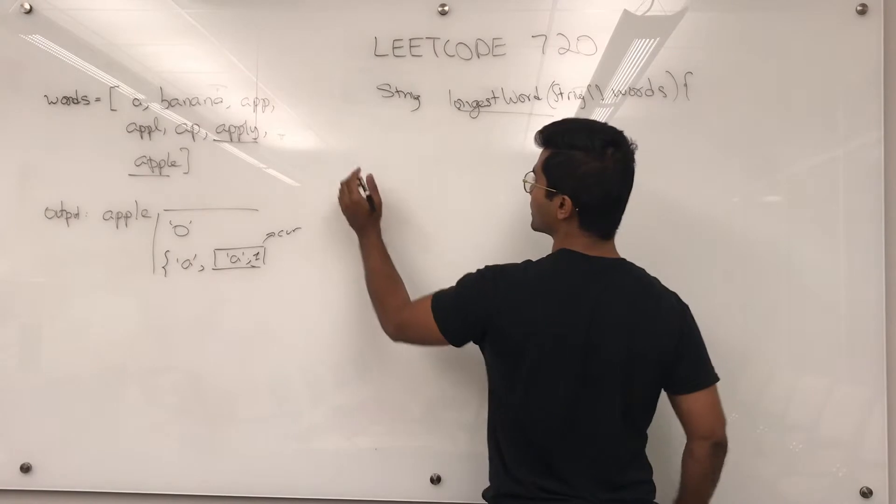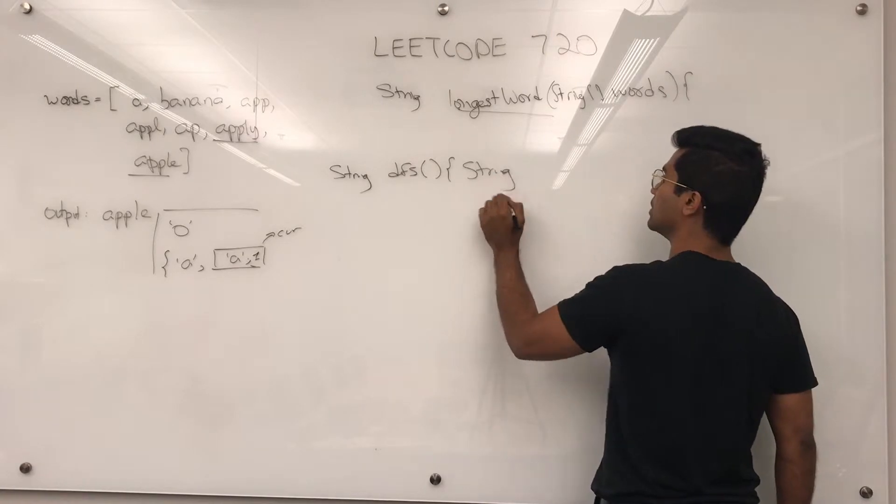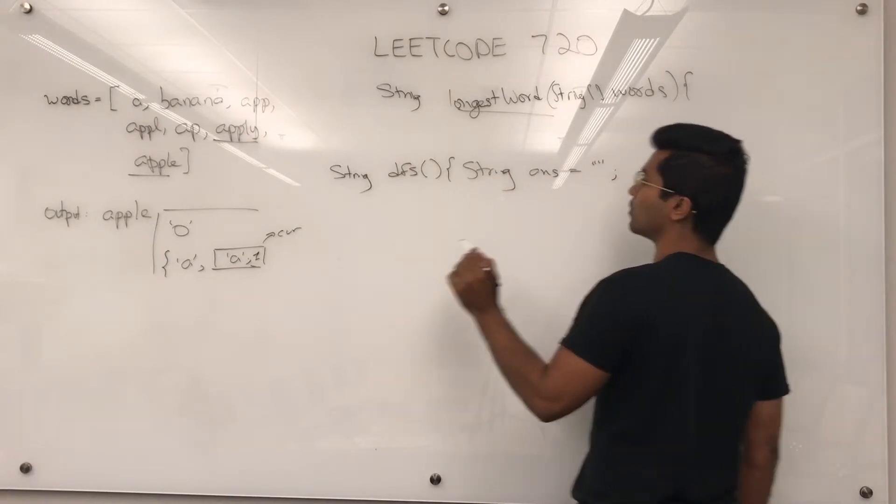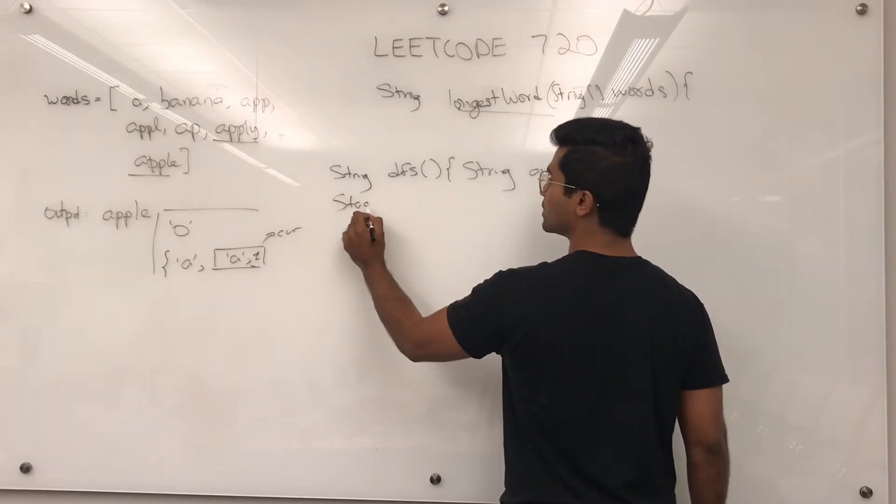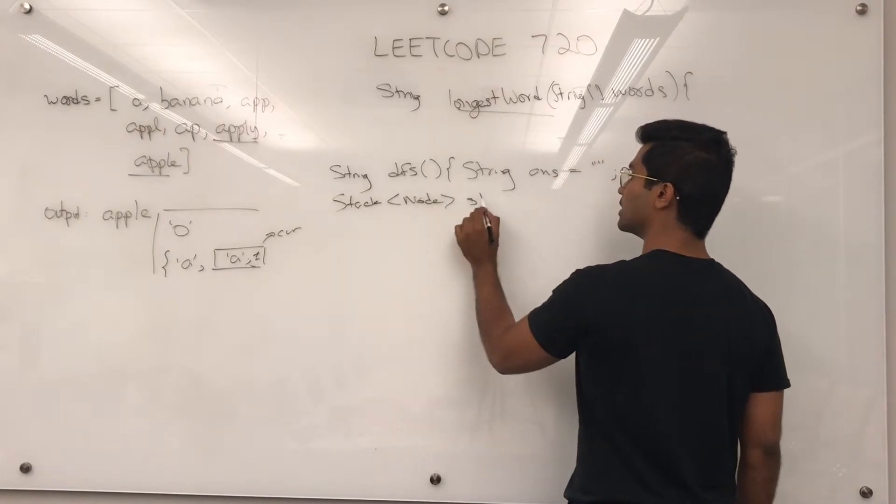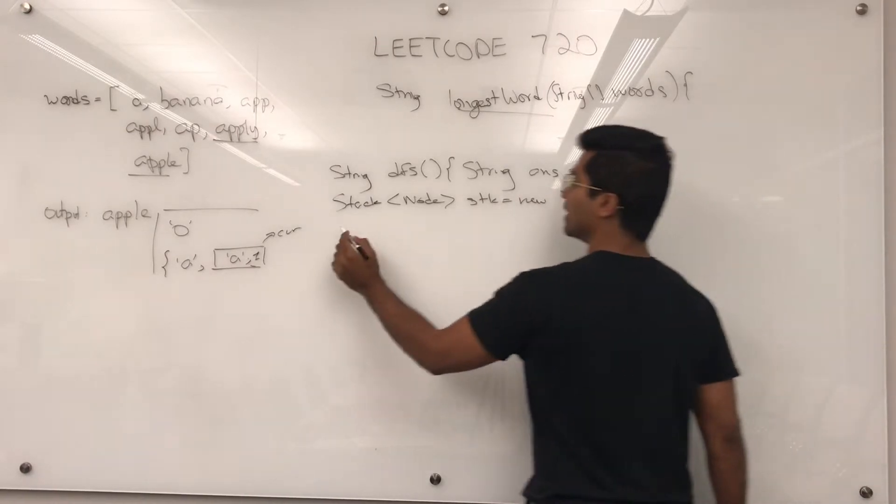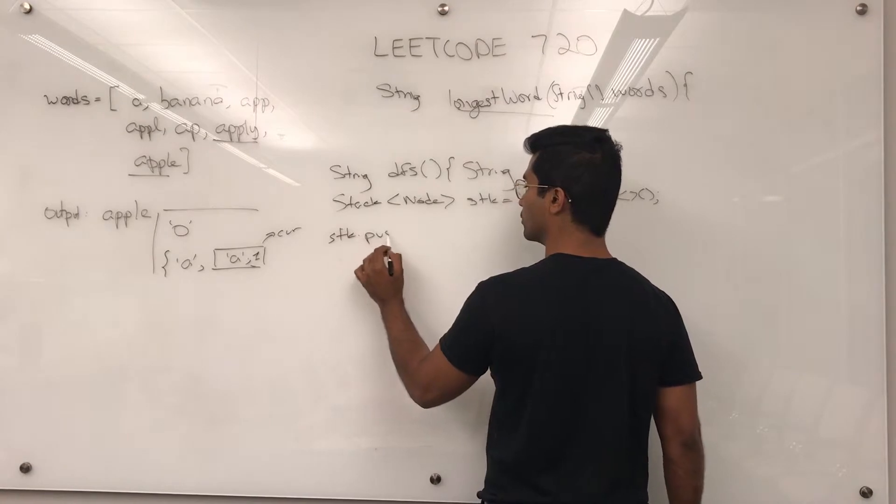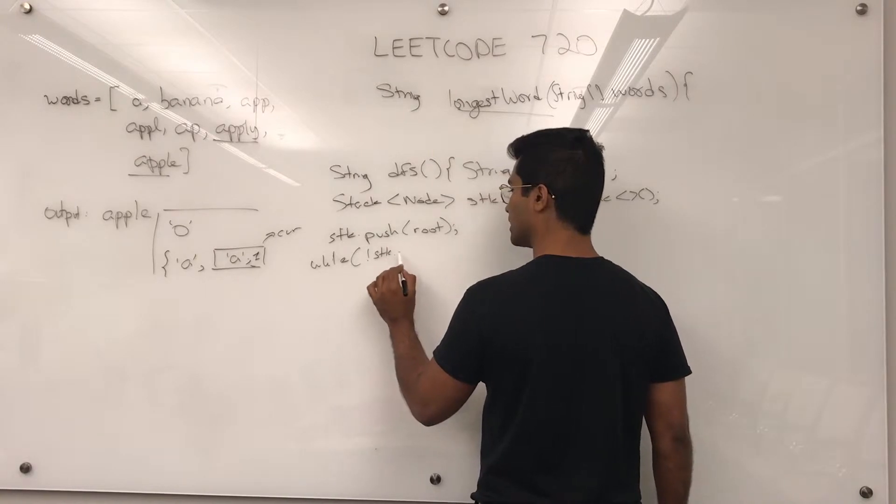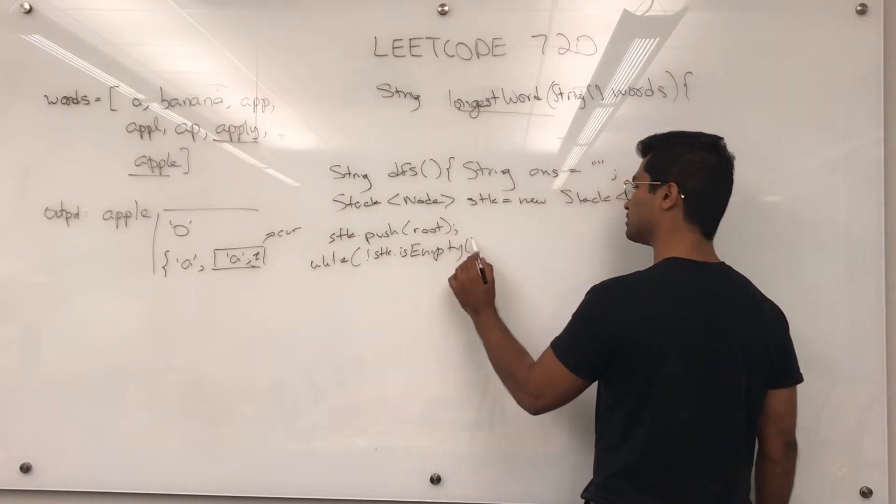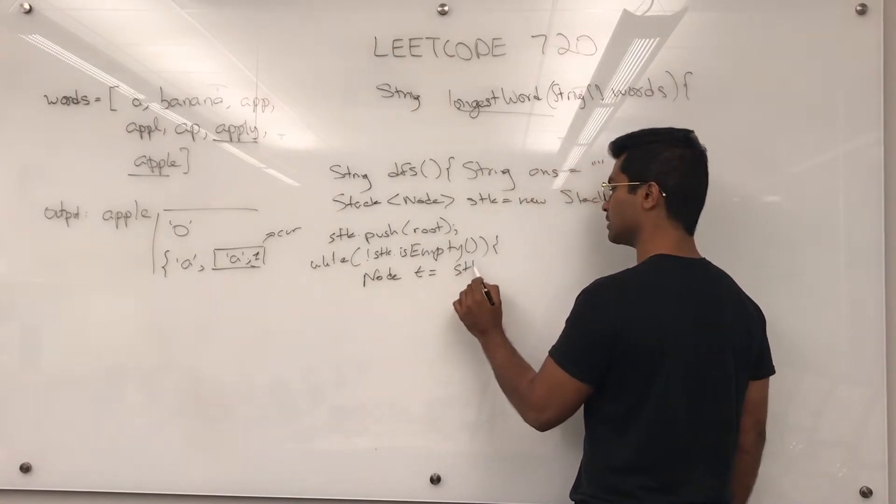Now I'm going to write the DFS, which is the meat of it. It's going to return a string. So let's initialize an answer. We want the longest one, so we're going to keep replacing it. Now we're going to do DFS, but we're going to do a stack implementation. Stack is new stack. And we're going to push the root on it. And while stack is not empty, what we're going to do is node T for temp = stack.pop.